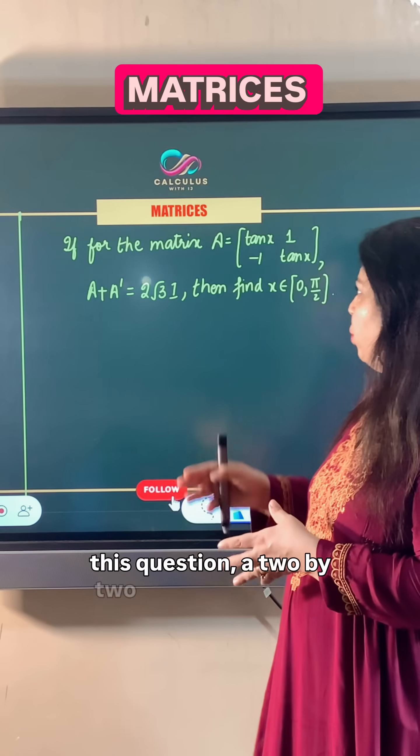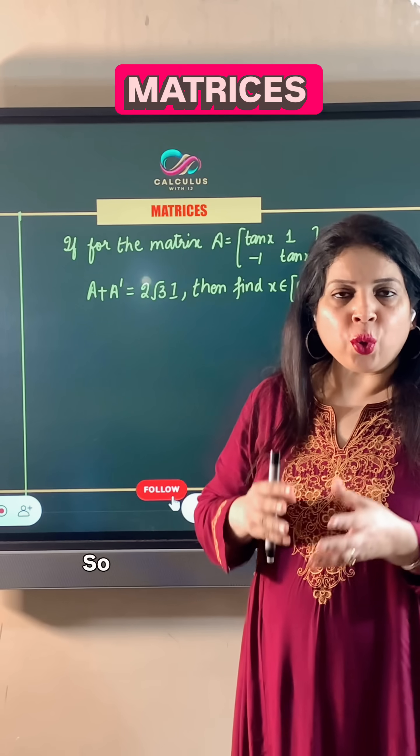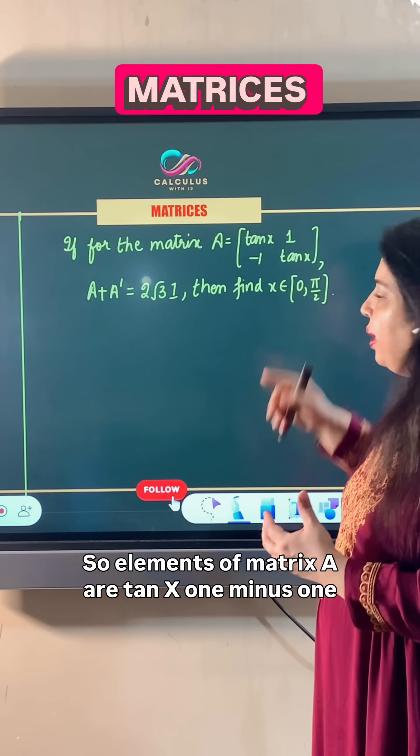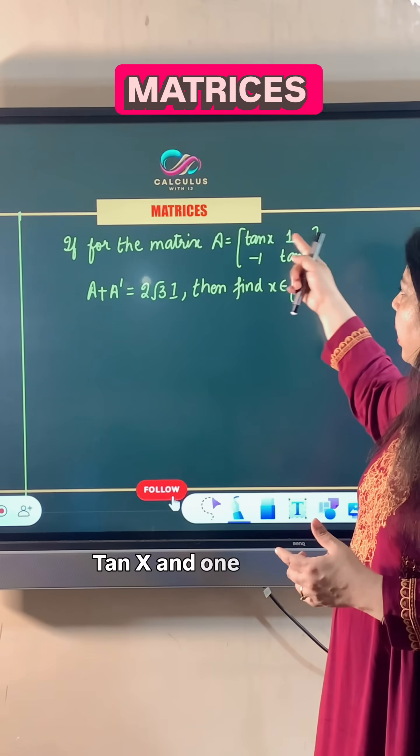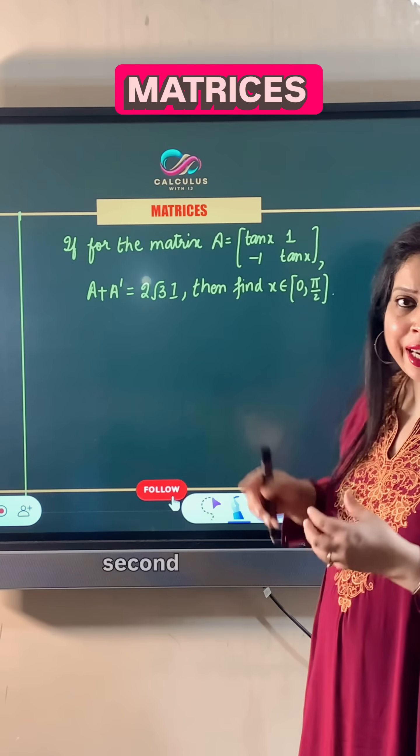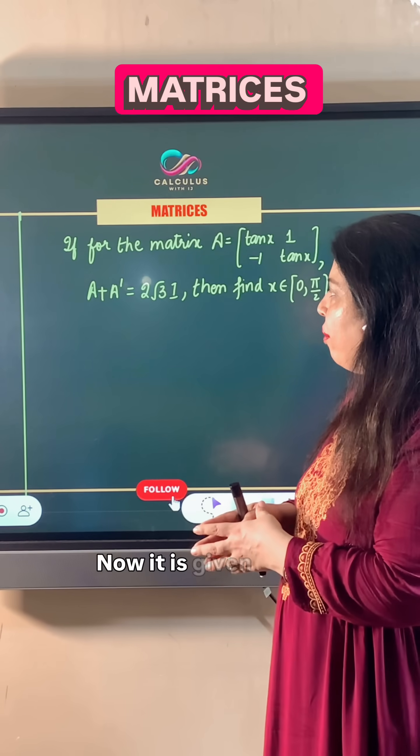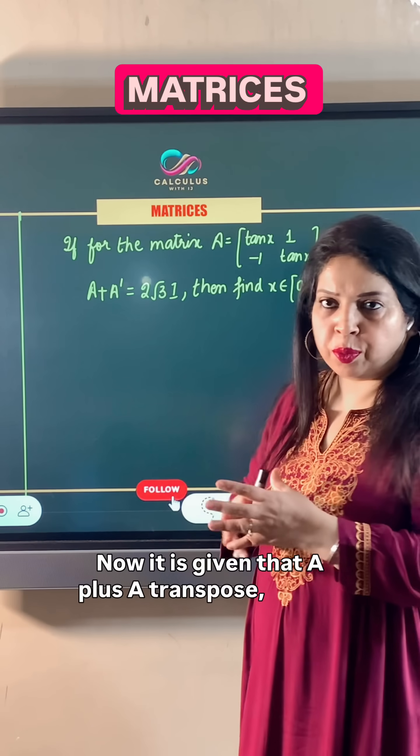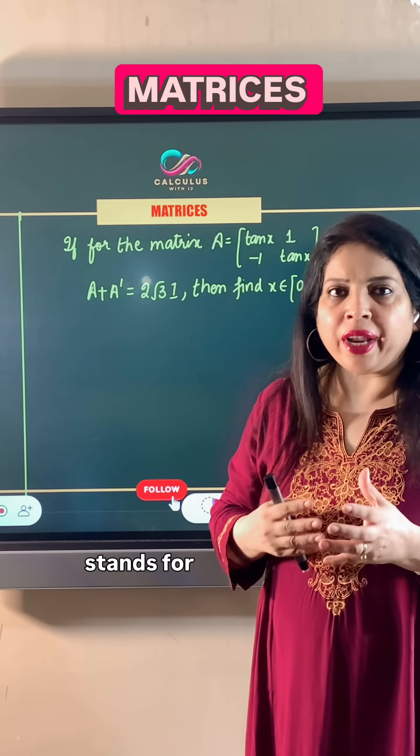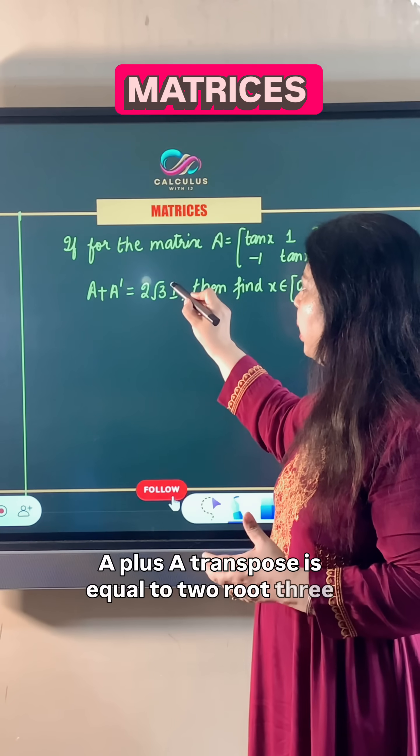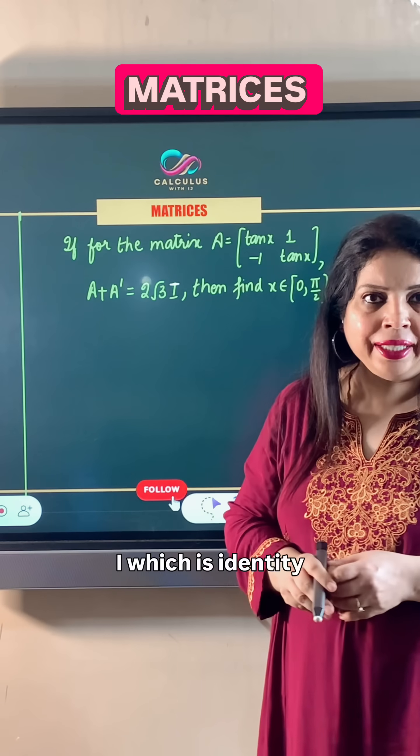In this question, a 2 by 2 matrix A is given. Elements of matrix A are tan x, 1, minus 1, tan x in the first row, and in the second row we have negative 1 and tan x. It is given that A plus A transpose is equal to 2 root 3 times the identity matrix.